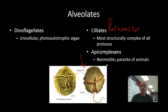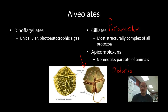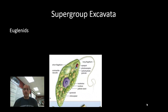The apicomplexians are a group of non-motile protozoa that are all parasites of animals. One of the characteristic members of the apicomplexians is the organism Plasmodium, which causes malaria. This organism resides in both humans and mosquitoes, and is a parasitic protozoa.